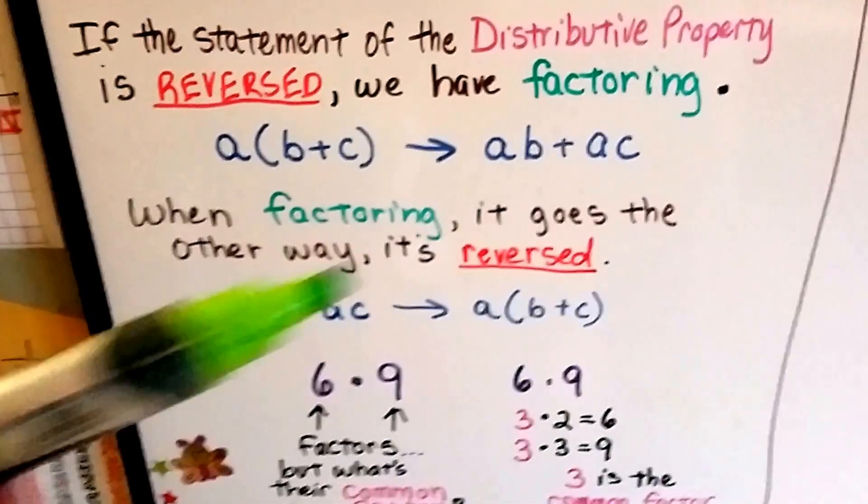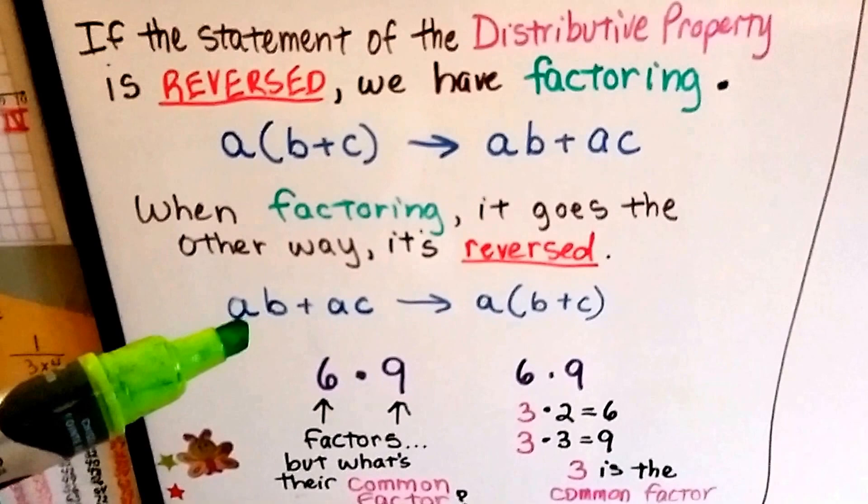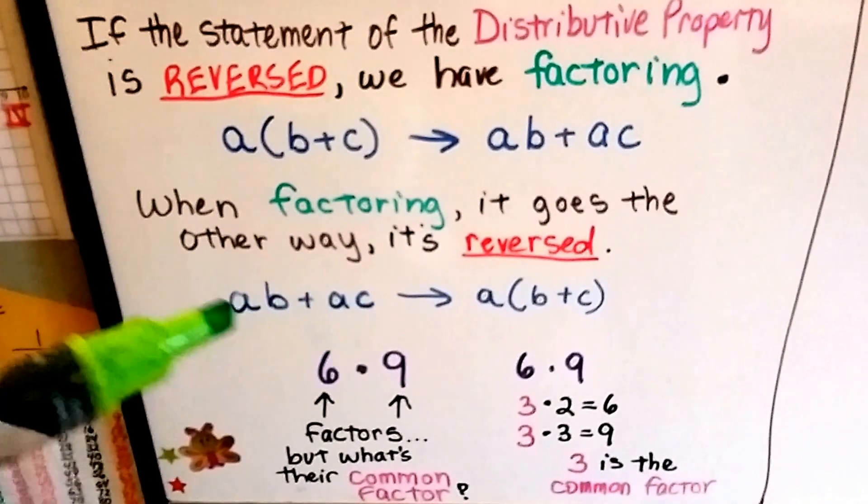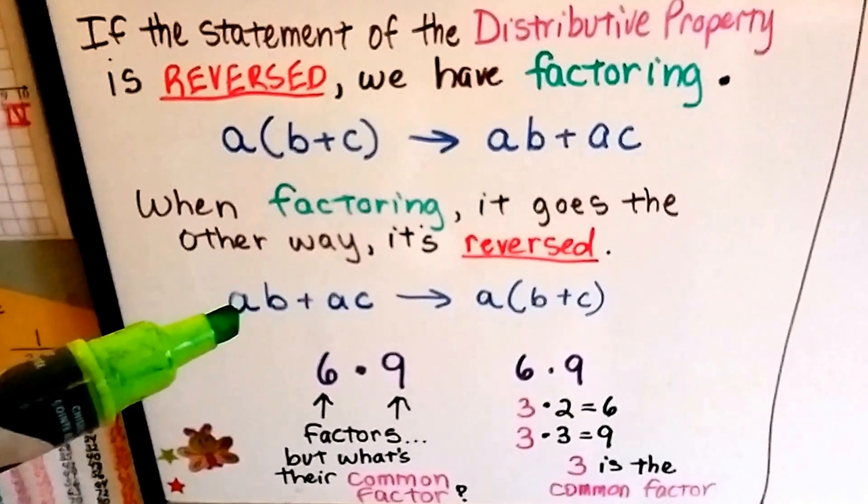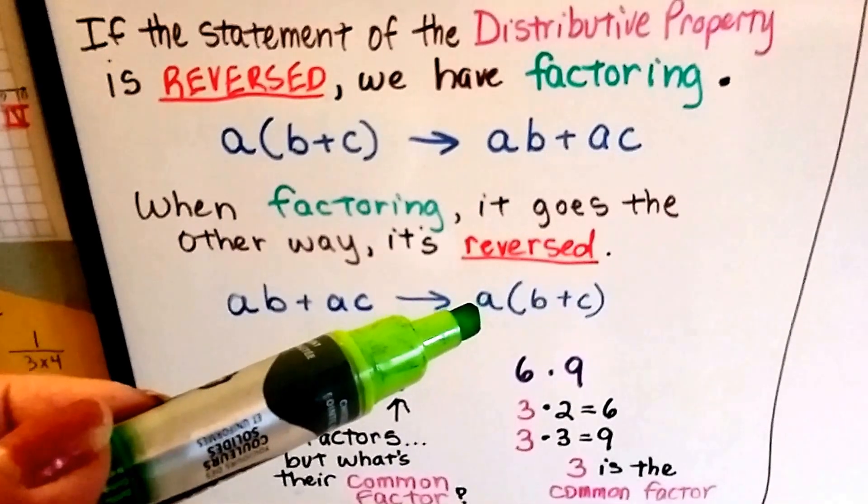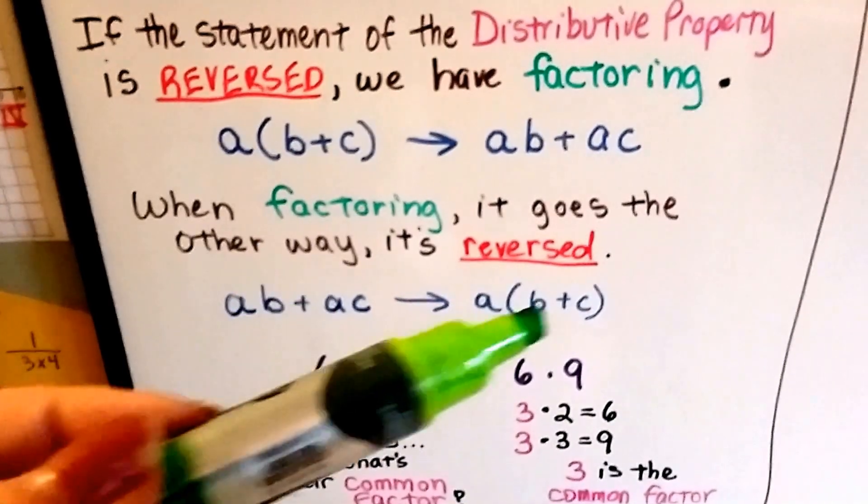So now we start on this way. This was our answer. Now, this is how we're starting. And we try to find out what they have in common. They both have an a in common. So the a is what's going to be on the outside of the parentheses, and the b plus c will be on the inside.